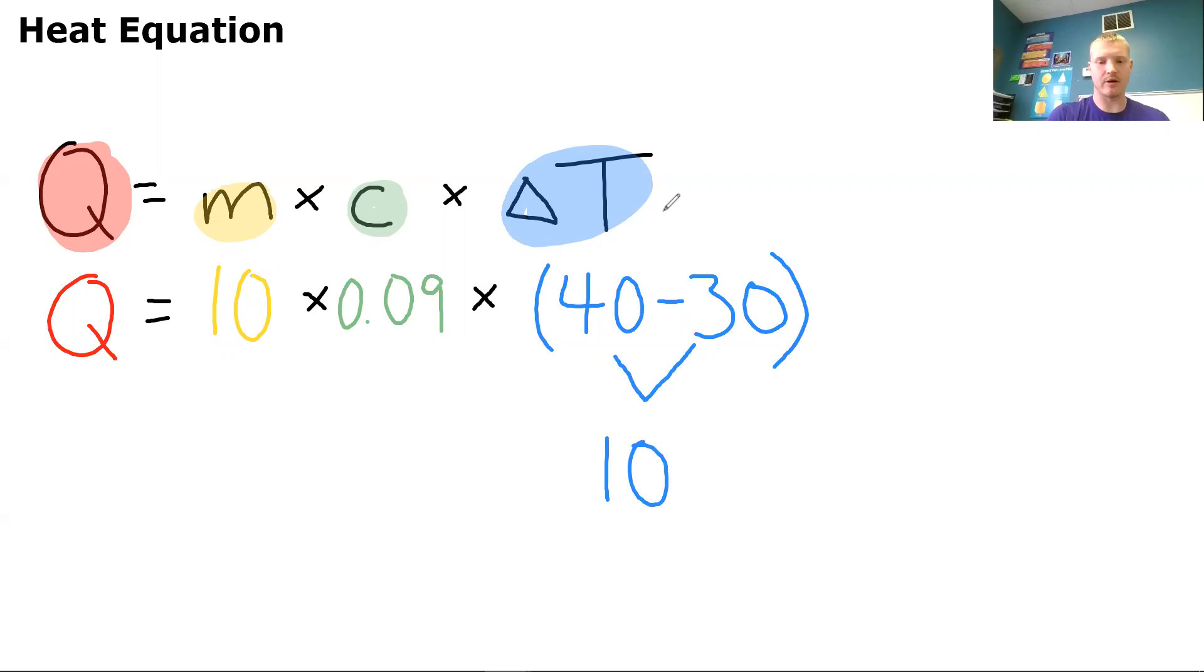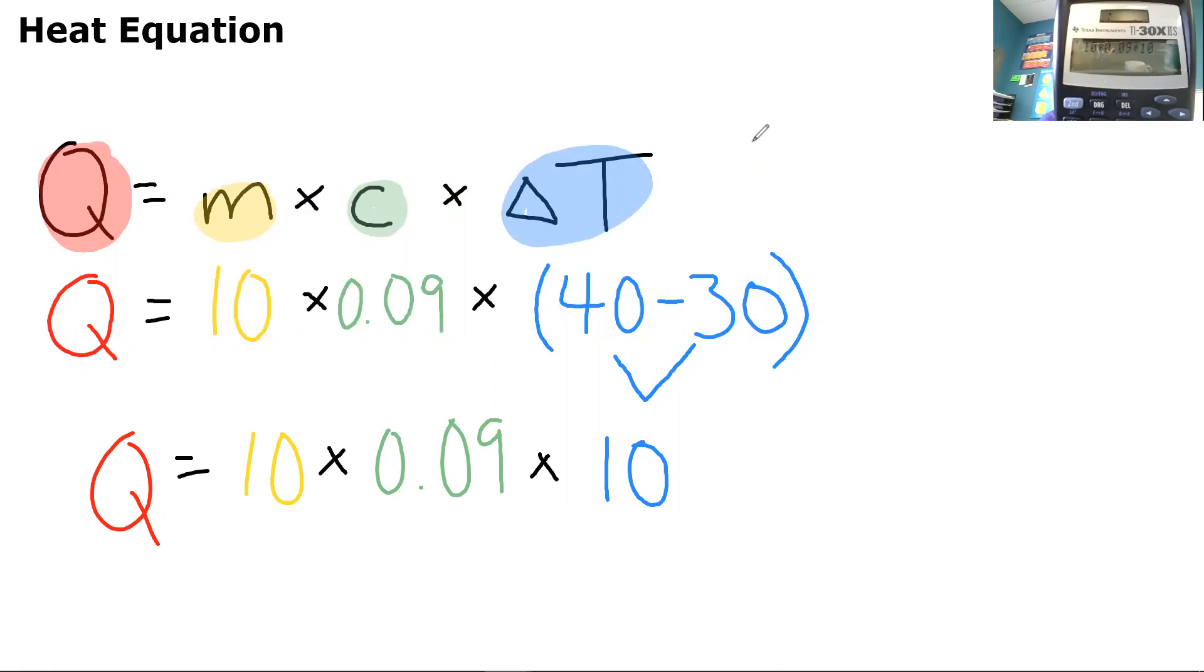And then we can write out the rest of our equation here. So Q equals 10 times 0.09 times 10. Now we can type that into our calculators. So 10 times 0.09 times 10. If this is how you typed it into your calculator, then you are doing it correctly. Press enter. You should get a heat value of 9. So I would write Q equals 9. And what is our units for this one? So we were solving for our heat in calories. So it would be 9 calories.